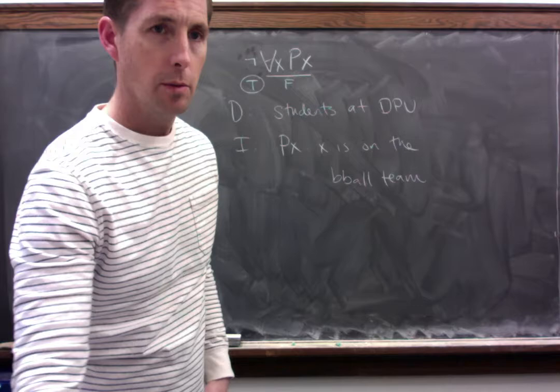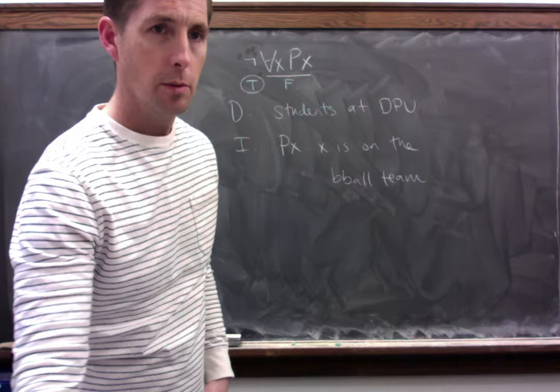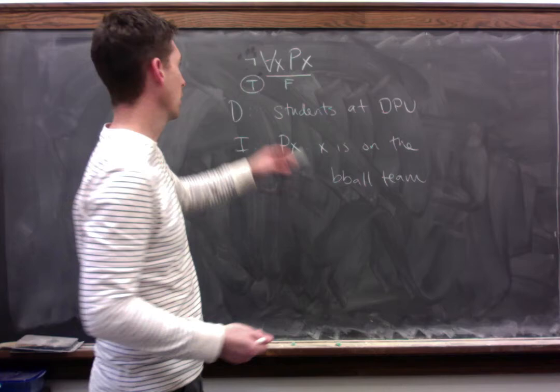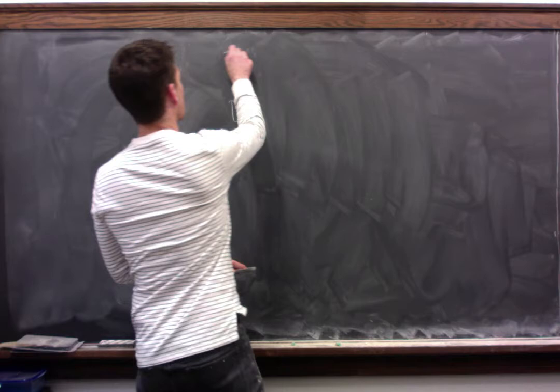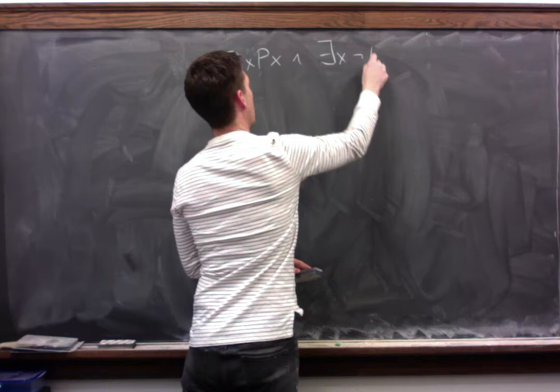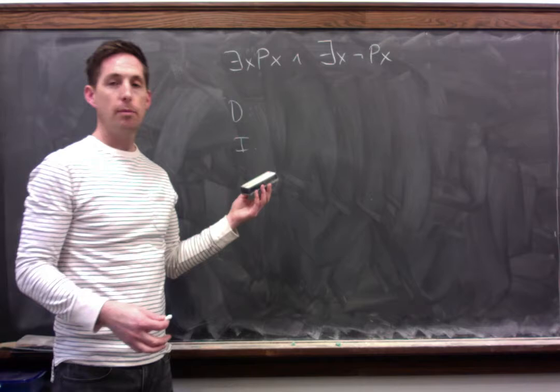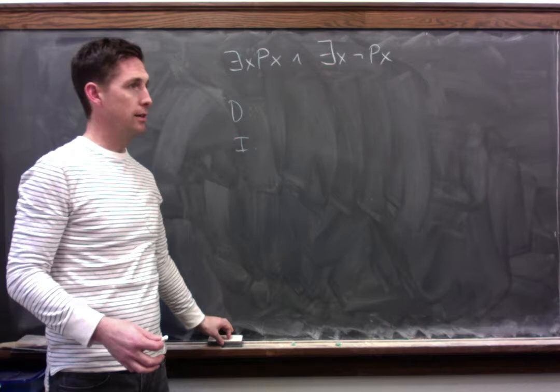How do we show that a formula is contingent? To show that a formula is contingent, we have to show that it could be true but it could also be false — that there are some situations where it's true and some where it's false. Let's go back to the earlier example: something is P and something is not P. We've already seen there's a situation where this is true. Now let's see how we'd go about showing that this is false, coming up with a universe where it's false. Putting that together with what we've already done, we'd have a universe where it's true and a universe where it's false, showing it's contingent.